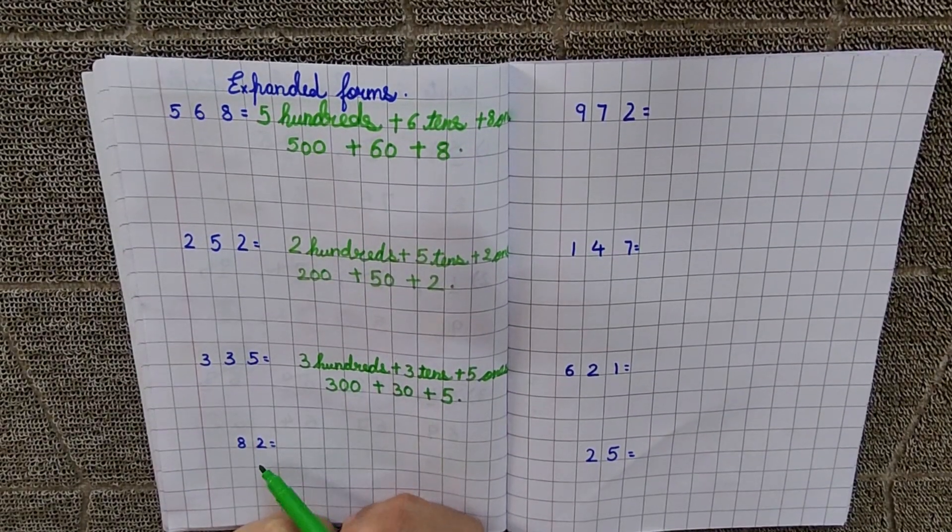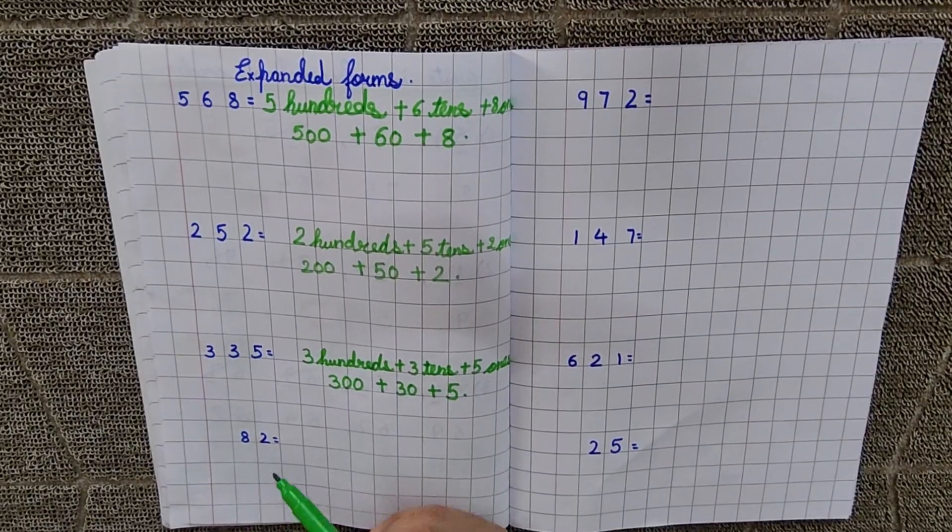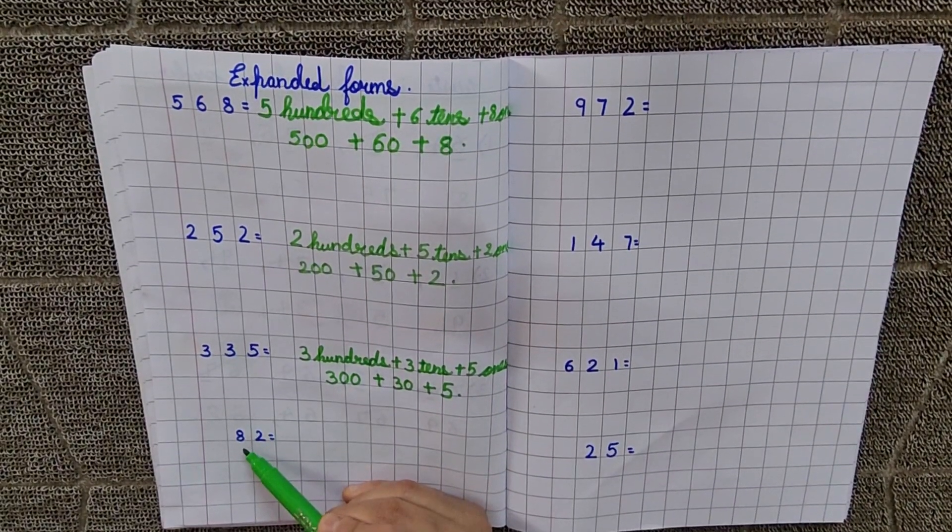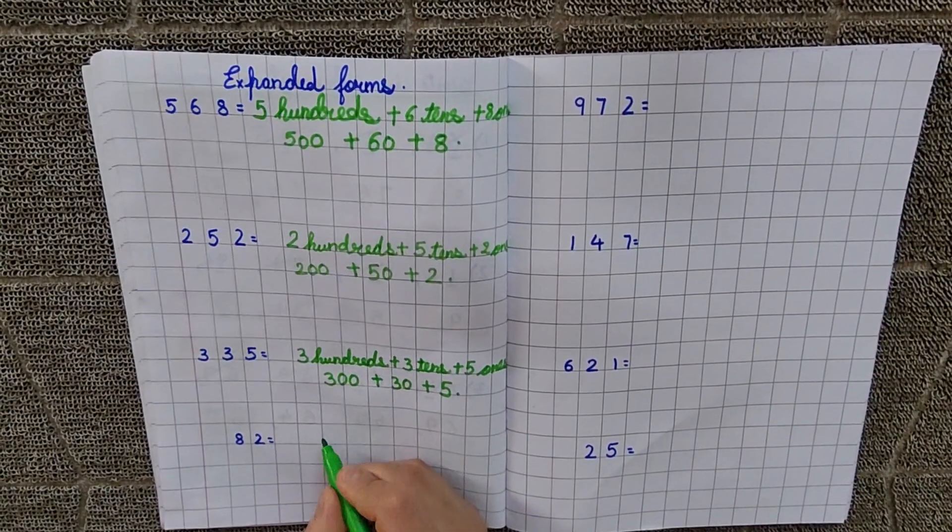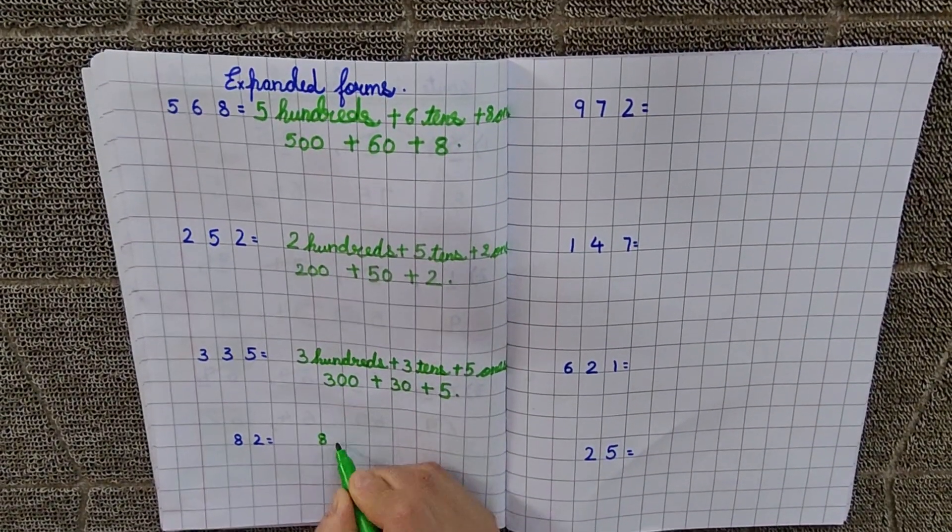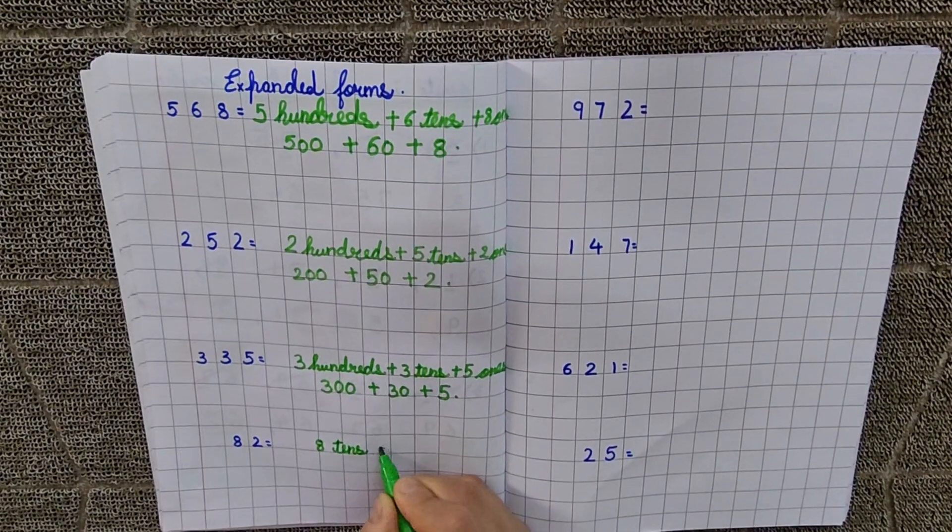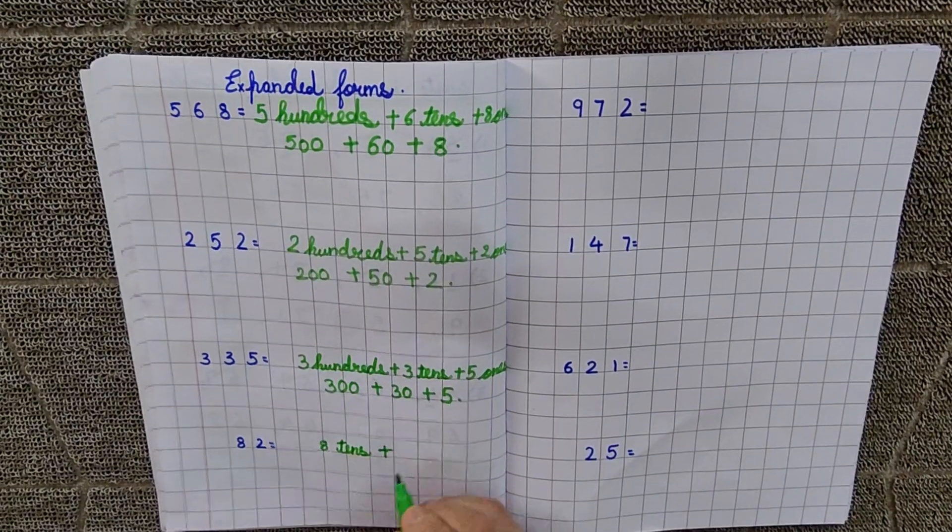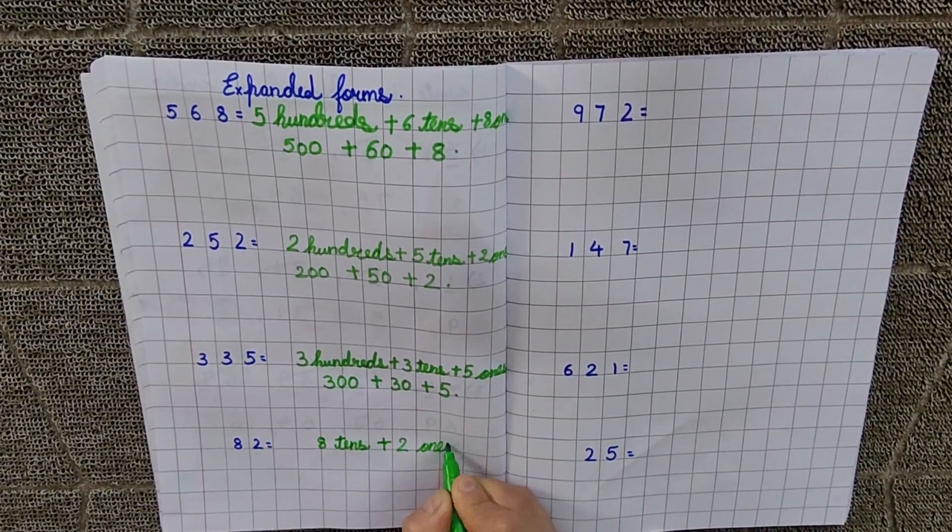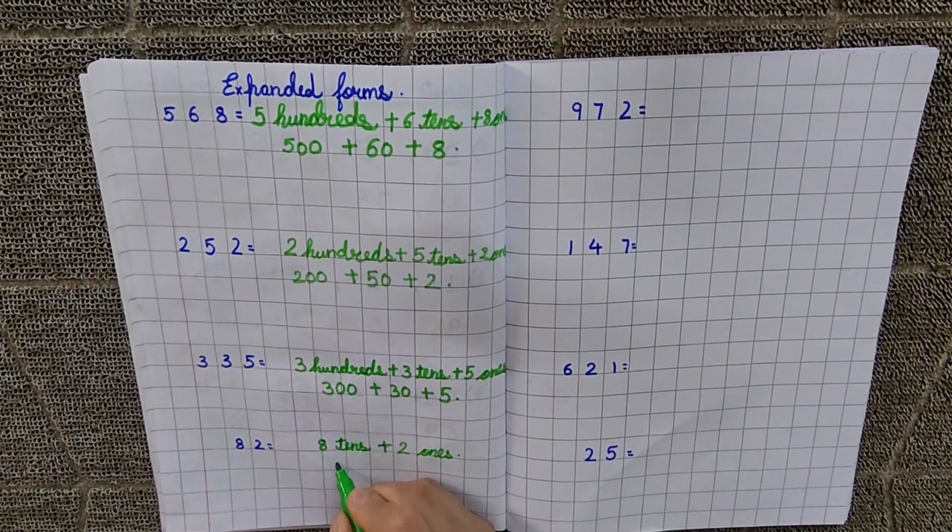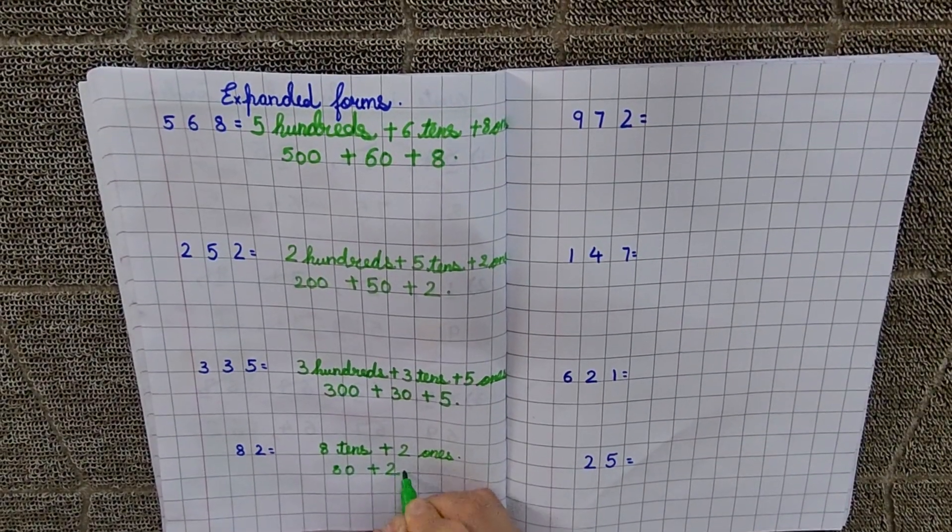Next is, now, 82. Now, what is the place value of 8 here? Yes, here is the tens. So, 8 tens plus 2 ones. So, 80 plus 2 ones.